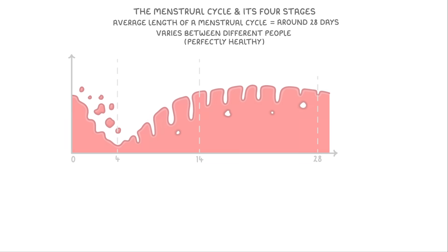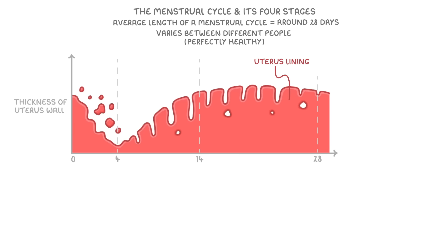To illustrate what's happening during the menstrual cycle, we usually use these graphs, which you might have noticed are a bit unusual. The red represents the uterus lining, with the y-axis showing the thickness of the uterus wall and the x-axis being the time in days.